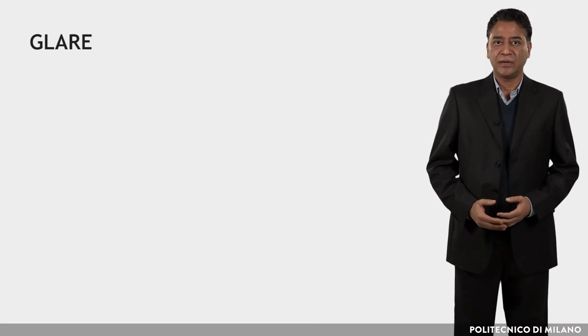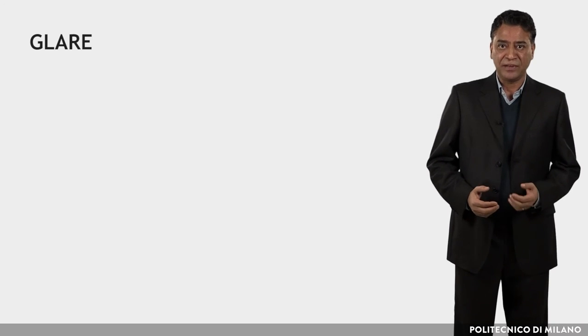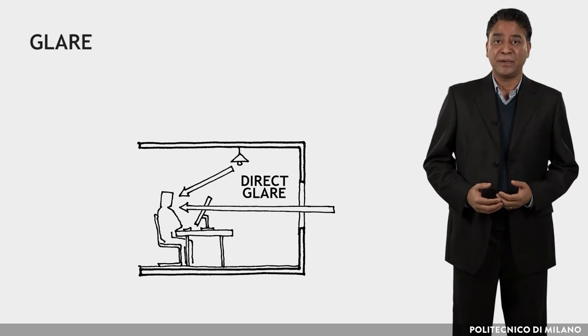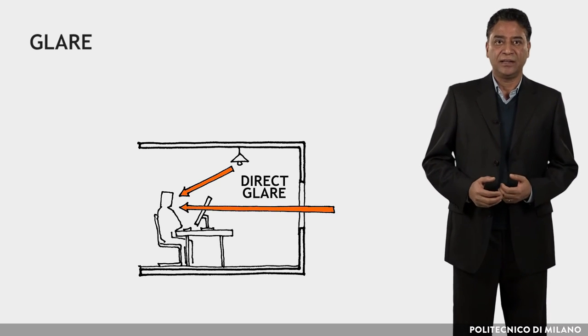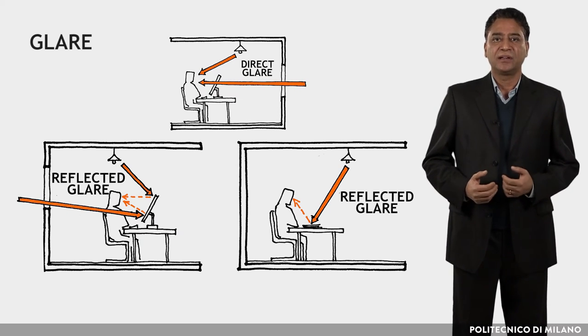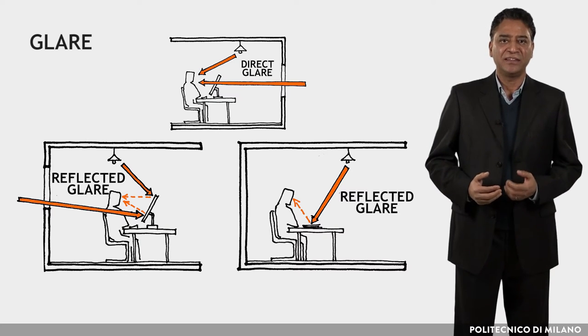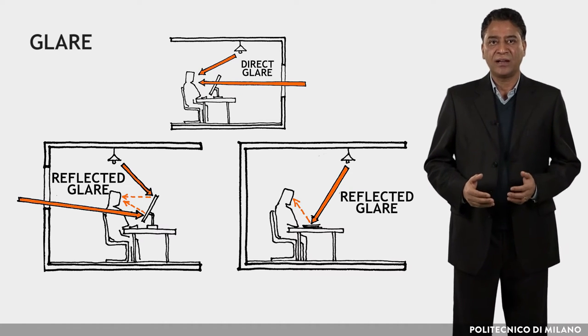As regards glare, the definition according to standard EN 12464-1 is the visual sensation produced by surfaces which produce high luminance gradients within the field of view. Direct glare depends on the characteristics of the space and sources, either natural or artificial, directly in the visual field of a person. Reflected glare is caused by shiny surfaces reflecting in the eyes the image of light sources, and it happens when the incident angle of light on the horizontal work plane falls into the view angle of the observer.